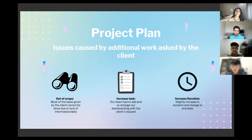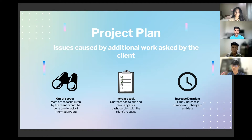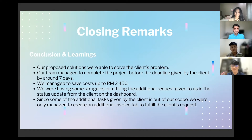For issues caused by additional work requested by the client: first, it was out of scope, as most tasks given — for example the balance sheet, working under a department, or posting to an online server platform — could not be done due to lack of information. Second, increased tasks: our team had to rearrange and add the invoices list as requested, which slightly increased our duration and dates.